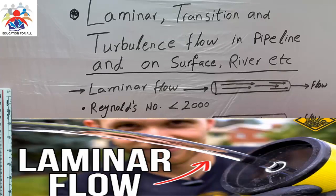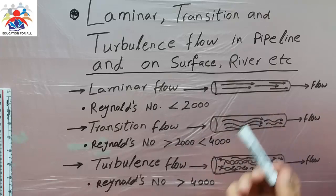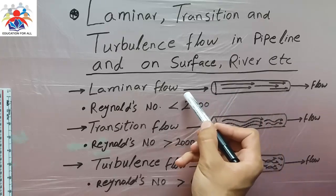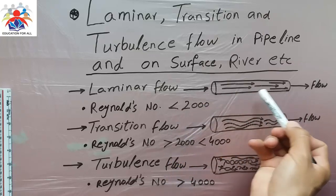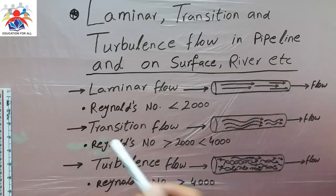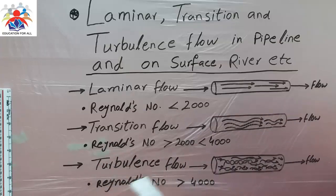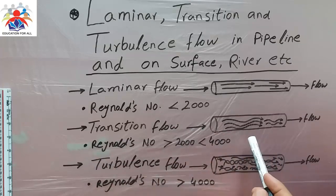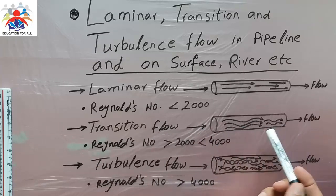In laminar flow, we have a Reynolds number less than 2000 — it means that our flow is not disturbed. As you can see in the diagram, flow in and flow out, the flow in the pipeline is not disturbed. In the transition zone, the Reynolds number is greater than 2000 but less than 4000, and the flow is a little bit disturbed, as you can see the waves in the diagram.